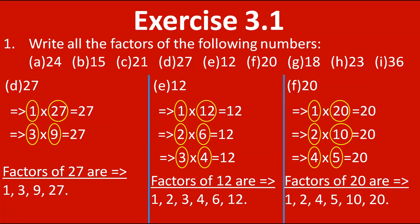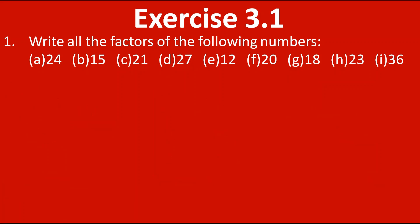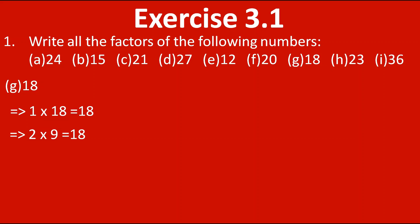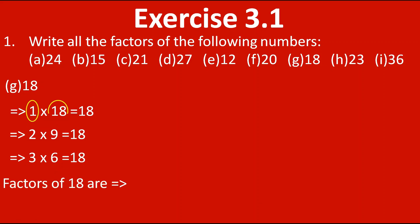Now we will move to G, that is 18. Starting from 1: 1 into 18 gives 18. Next number is 2: 2 nines are 18. Next is 3: 3 sixes are 18. Next is 4 — we don't have 18 in the table of 4, or 5. Directly we move to 6, but we have already written 6 here, so it is reversing and we stop. The factors of 18 are 1, 2, 3, 6, 9 and 18.